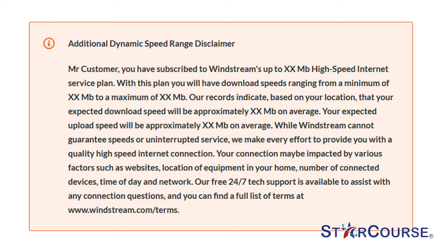Here is an example of the disclaimer for a customer who qualifies for dynamic speed ranges. Your tools will provide you with a list of disclaimers based upon the products and services they subscribe to at the end of your order. Mr. Customer, you have subscribed to Windstream's up to 1 GB high-speed Internet service plan. With this plan you will have download speeds ranging from a minimum of 800 MB per second to a maximum of 1 GB per second. Our records indicate, based on your location, that your expected download speed will be approximately 1 GB per second on average. Your expected upload speed will be approximately 1 GB per second on average. While Windstream cannot guarantee speeds or uninterrupted service, we make every effort to provide a quality high-speed Internet connection. Your connection may be impacted by various factors such as websites, location of equipment in your home, number of connected devices, time of day and network. Our free 24/7 tech support is available to assist with any connection questions, and you can find a full list of terms at www.windstream.com.